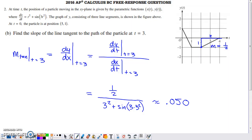Part B asks us to find the slope of the line tangent to the path of the particle at time 3. The way that you're going to find slope when you're dealing with a plane curve or a curve defined by a set of parametric equations is you're going to find the rate of change of y with respect to x by taking the rate of change of y with respect to t and dividing by the rate of change of x with respect to t.